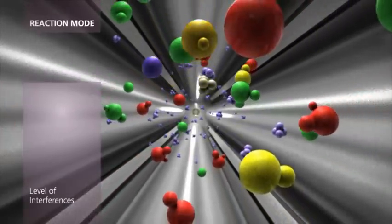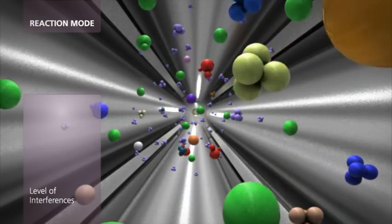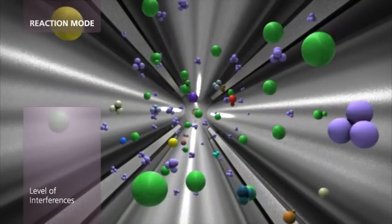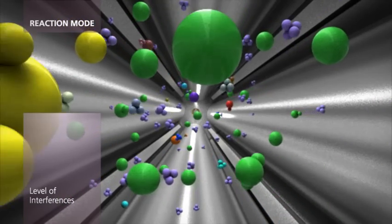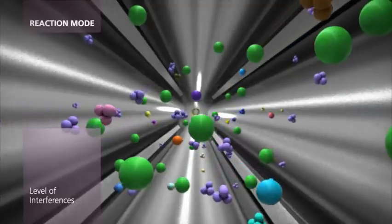Using a highly reactive gas, interferences are specifically targeted and removed through chemical reactions. When running as a dynamic reaction cell, a scanning quadrupole minimizes the formation of new polyatomic interferences while retaining analyte sensitivity.